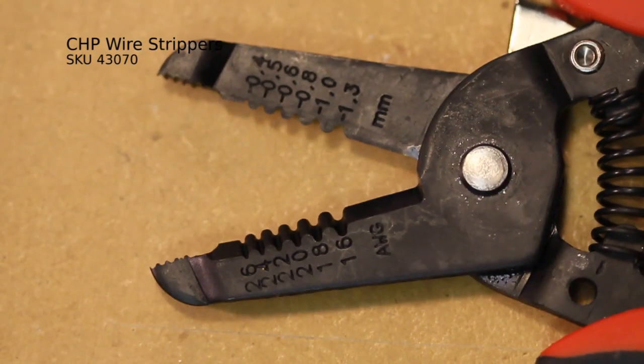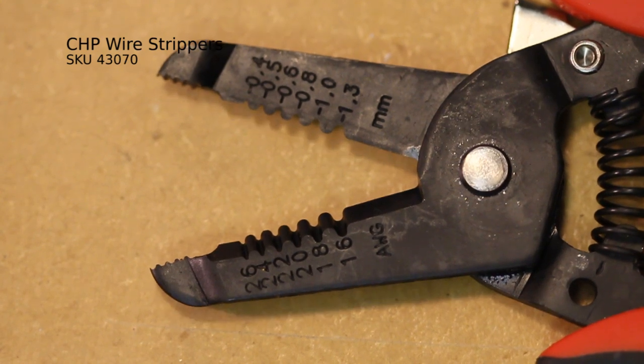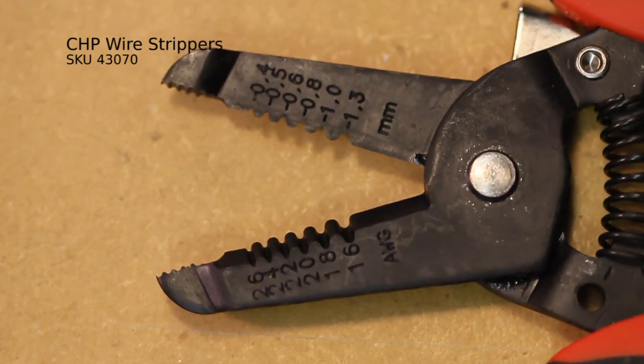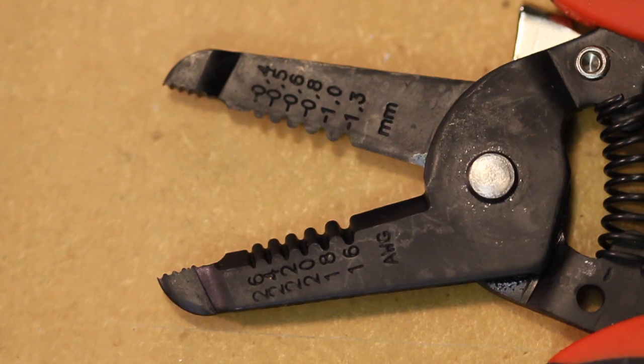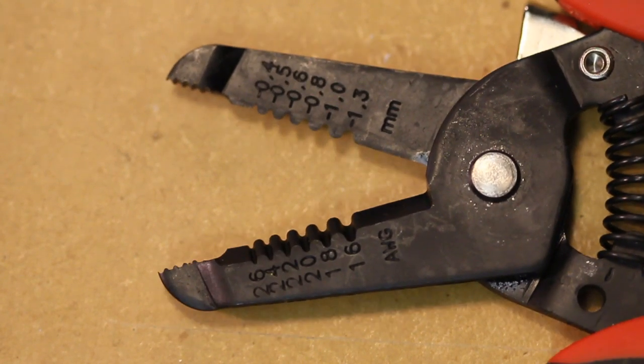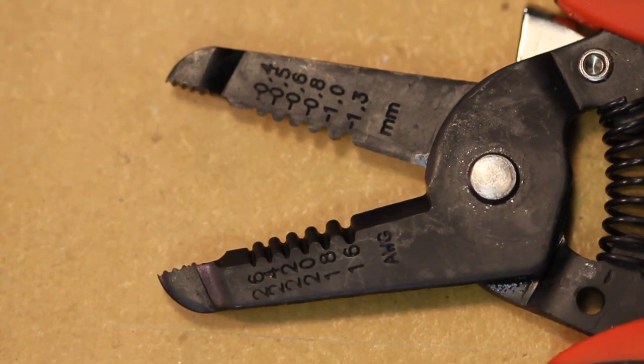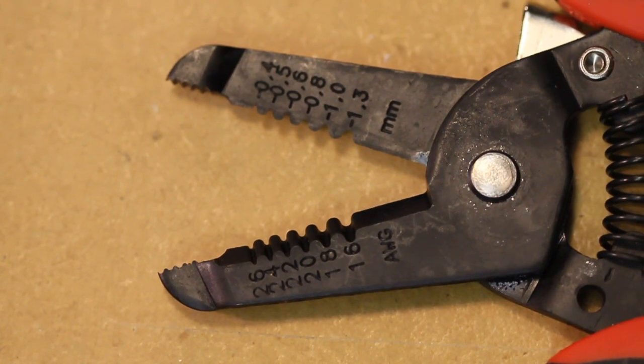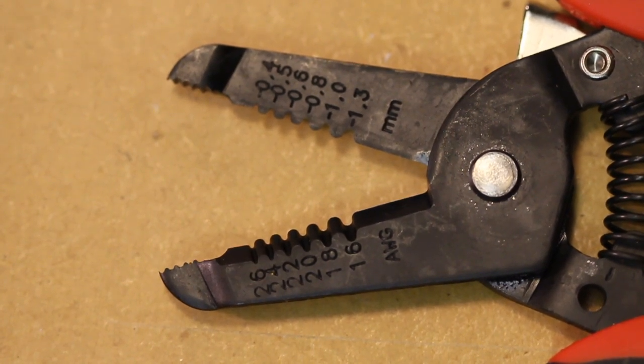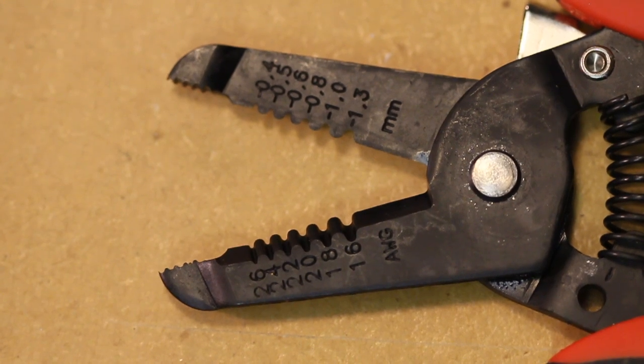Alright, so we're going to start off by introducing you to some of these hand tools. Right here is a pair of wire strippers. As you can see, the gauges are 26 to 16. Those are a pretty good range for a lot of the wires that we use in the hobby industry, which are mostly around 20 to 24 gauge, with probably the most common being 22 gauge.